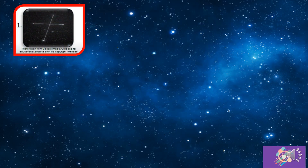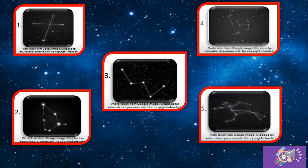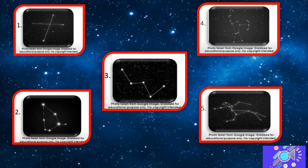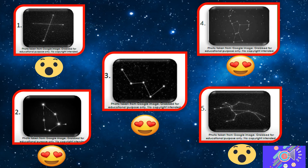These are the pictures for Learning Task 3: numbers one, two, three, four, and five. For number one, the answer is a wow emoji. Number two is a heart-eyes emoji. Number three is a heart-eyes emoji. Number four is a heart-eyes emoji. And number five is a wow emoji.